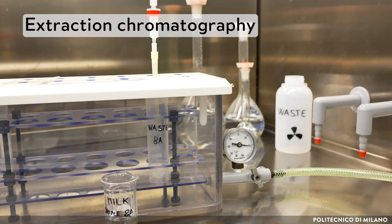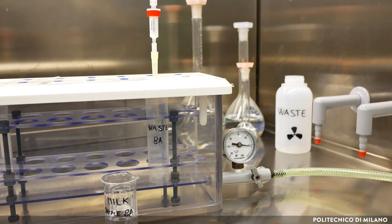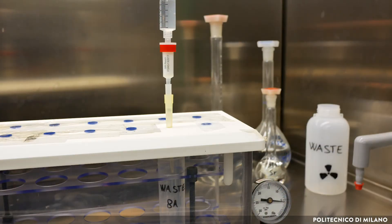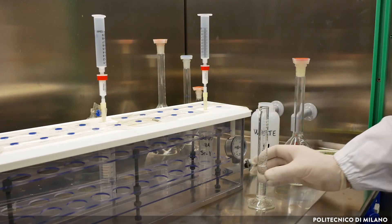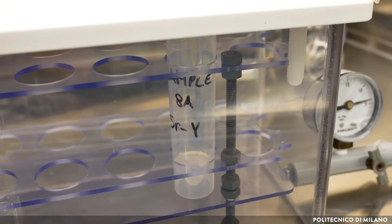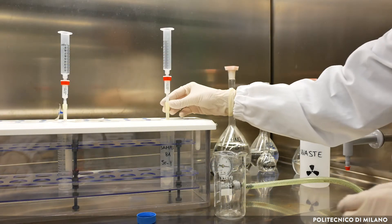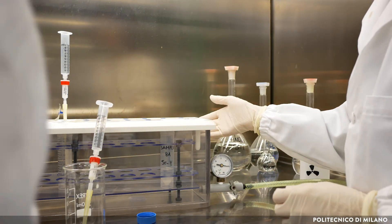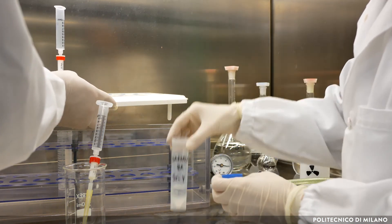The separation of strontium-90 from the solution is achieved by extraction chromatography. The sample solution coming from the pre-treatment is loaded on a resin column containing crown ether as the extraction reagent. Strontium is retained by the column, while its decay product yttrium-90 and interfering radionuclides are flushed out from the column. Strontium-90 is eluted with a suitable acid and collected in a safe place in order to wait for yttrium-90 ingrowth.